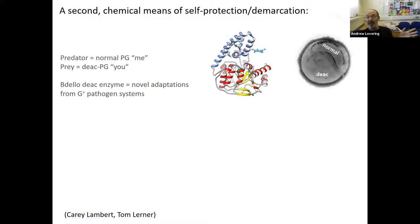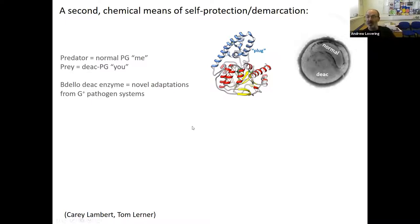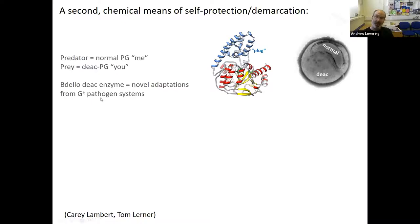Schoen-Rittenberg also saw that the cell wall material of the prey cell is deacetylated, while the predator cell wall material is not. You end up with a protection mechanism by chemically making a different material in the cell you're attacking than the cell you are. So the Bdellovibrio inside has normal peptidoglycan while the prey peptidoglycan is deacetylated — courtesy of an enzyme that has a little plug on it. Peptidoglycan deacetylation is most common in gram-positive pathogens when they want to evade lysozyme.